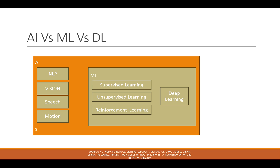Speech and text are part of AI, as well as motion detection and movement detection — these all fall under artificial intelligence.